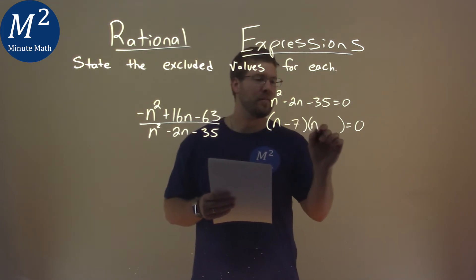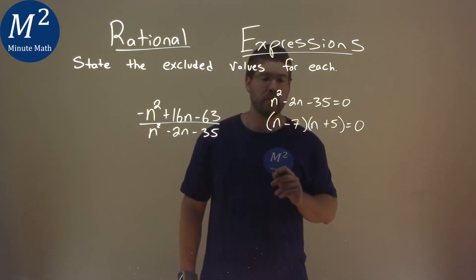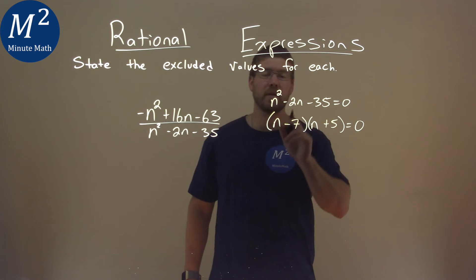That's going to be a negative 7 and a positive 5. Negative 7 times 5 is a negative 35, but when we add the two numbers, we get the negative 2.